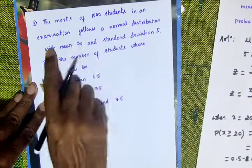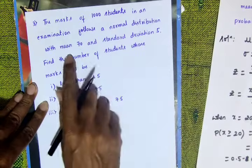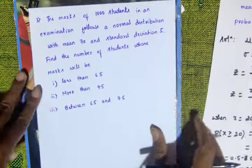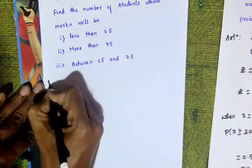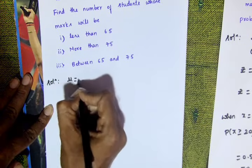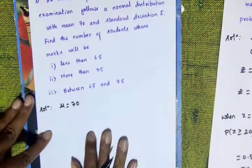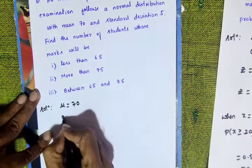The marks of 1000 students in an examination follow a normal distribution with a mean of 70 (mu equals 70) and standard deviation of 5 (sigma equals 5).